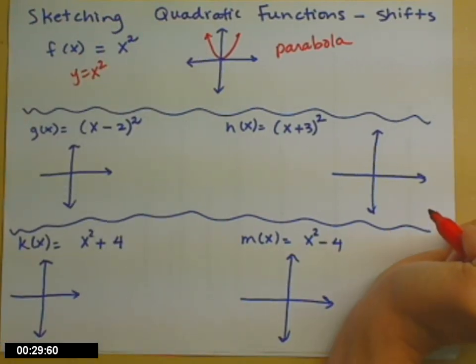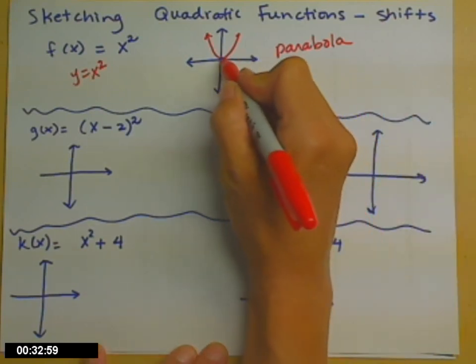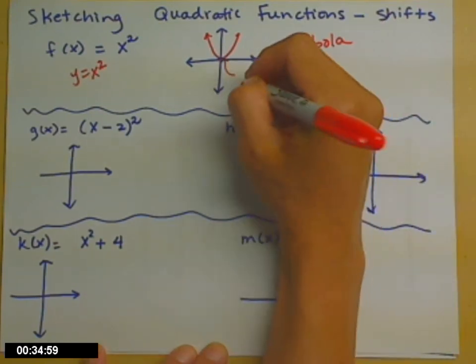So f(x) equals x squared looks like a parabola. This point right here is called the vertex.